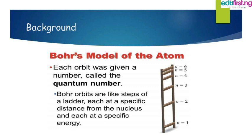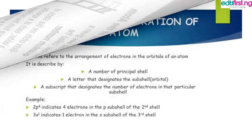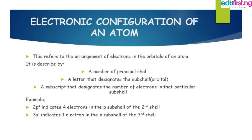In the Bohr model of an atom, each orbit is given a number called the quantum number. These orbits are like steps of a ladder, each with a specific distance from the nucleus and a specific energy. The n1, n2, n3 notation signifies the energy levels.